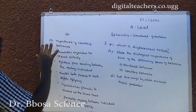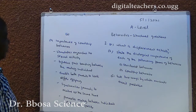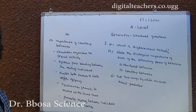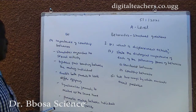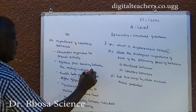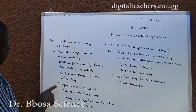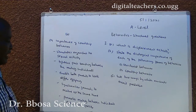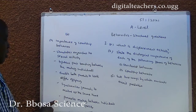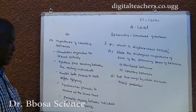B. Number 2: Importance of courtship behavior — it stimulates organisms to sexual activity, tightens pair bonding between mating individuals, enables both parents to look after offspring, synchronizes gonads to mature at the same time, and promotes mating between individuals of the same species.